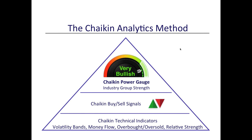We've encapsulated the Chaikin methodology in this pyramid. At the top is the Power Gauge Rating — looks like the gas gauge on your car, goes from very bearish to very bullish. Right underneath that is industry group strength; we'll look at how ETFs can lead you to strong industry groups. At the bottom of the pyramid is a base of five technical indicators that work very well with the quantitative Power Gauge model. The Power Gauge tells you the fundamentals, the technicals confirm them, and right in the middle — the sweet spot — are the buy and sell signals.